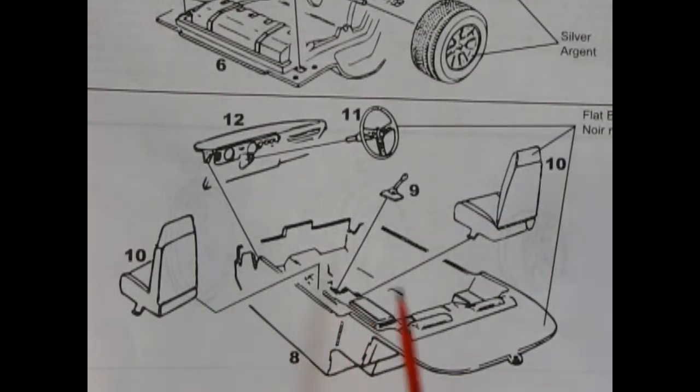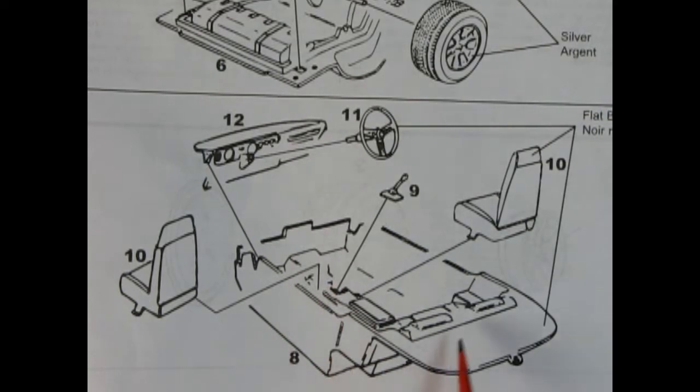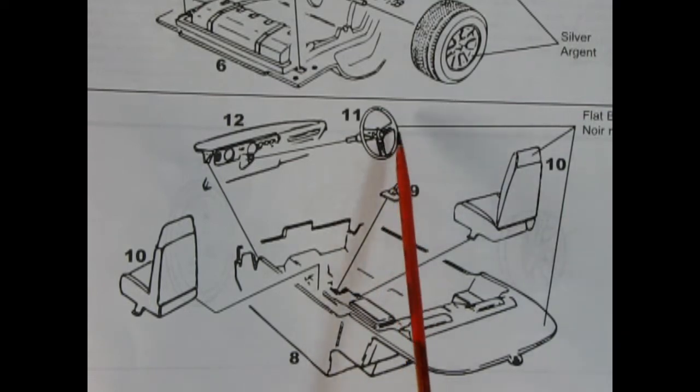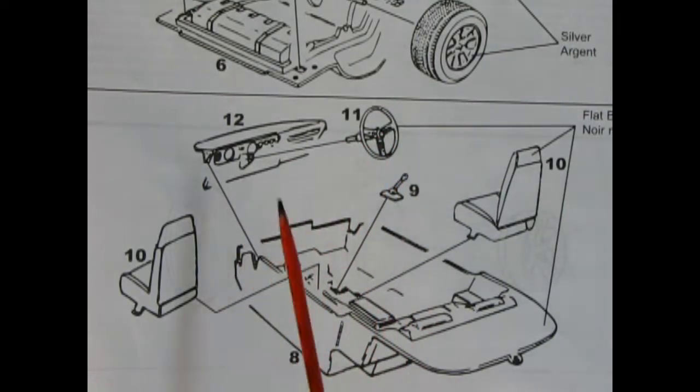Our next panel shows the interior going together. We've got the nice plastic tub and our two front bucket seats, as well as the shift lever and boot. And then there's our steering wheel and that nice dashboard again.